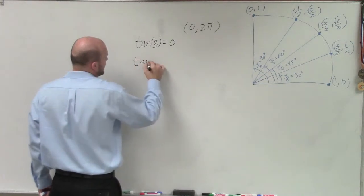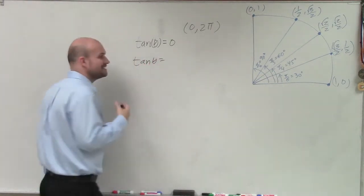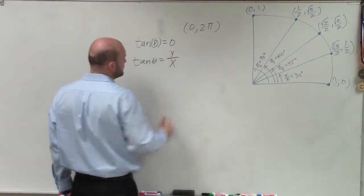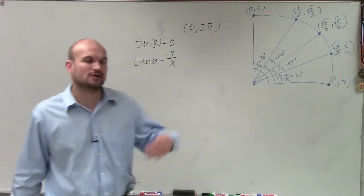Now remember, the tan of an angle, any angle that's going to intersect on the unit circle, is going to be equal to the value of x over y of that coordinates where that angle intersects the unit circle.